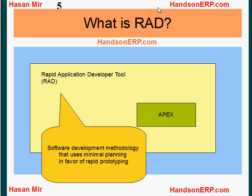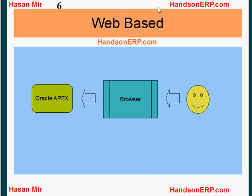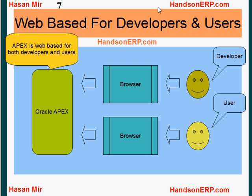RAD is a software development methodology that uses minimal planning in favor of rapid prototyping. APEX is a web-based application accessible by a browser, and is web-based for both developers and end users. Developers use a browser to access the development tool, and users use a browser as well to access the developed application.